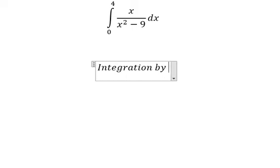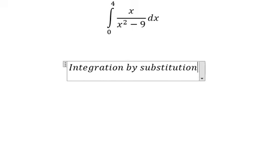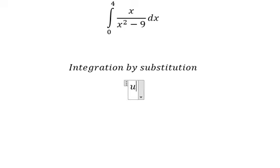I will put u equals to x squared minus 9. Later, we need to do the first derivative for both sides. Because we don't have number 2, we need to divide both sides by number 2.